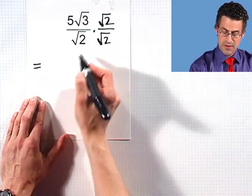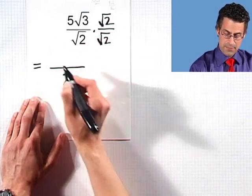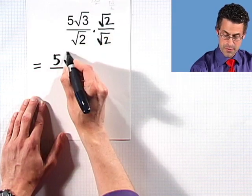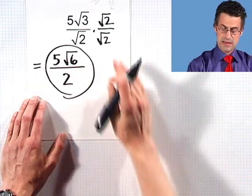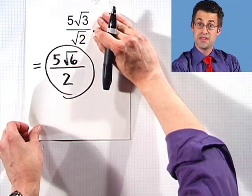But now on the bottom, I've got the square root of 4, which is just 2. And on the top, I see 5 times square root of 3 times square root of 2, which from our property is the square root of 6. And so now you'll notice it's the exact same quantity as before, but now you'll see that there's no square root in the denominator.